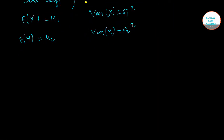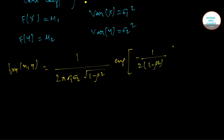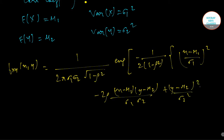Then, the PDF is given as f(X,Y) = 1/(2π sigma_1 sigma_2 √(1-ρ²)) × exp[-1/(2(1-ρ²)) × ((x-μ_1)/σ_1)² - 2ρ(x-μ_1)(y-μ_2)/(σ_1 σ_2) + ((y-μ_2)/σ_2)²].